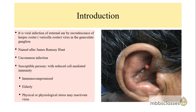Herpes zoster oticus is a viral infection of the external ear which is caused by the recrudescence of the varicella zoster virus in the geniculate ganglion. This disease is named after James Ramsay Hunt. It is not a very common infection and it is a cause of facial paralysis in about 2-10% of the cases.